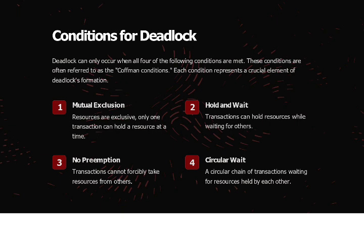Mutual exclusion: resources are exclusive, meaning only one transaction can hold a resource at a time. Hold and wait: a transaction can hold a resource while waiting for others. No preemption: transactions cannot forcibly take resources from others. Circular wait: a circular chain of transactions waiting for resources held by each other.